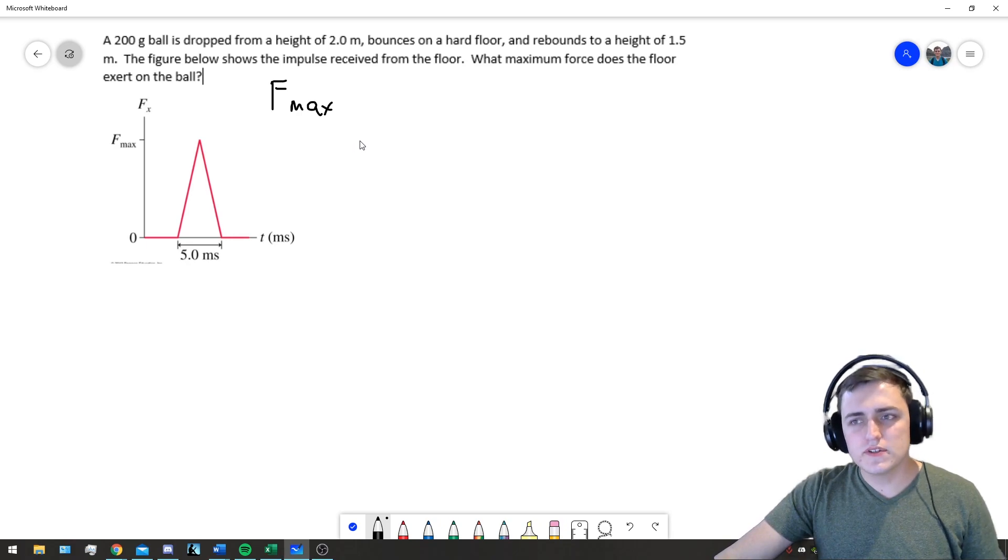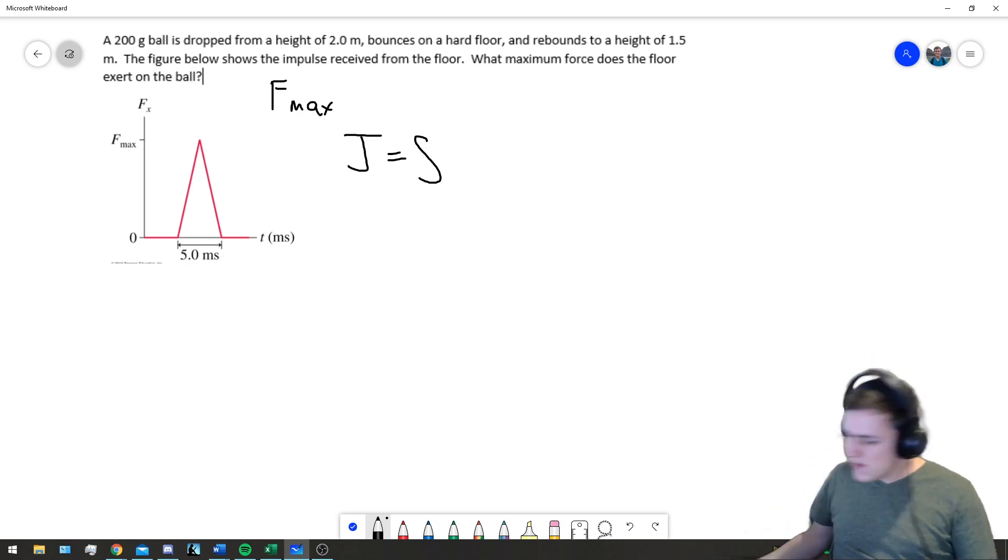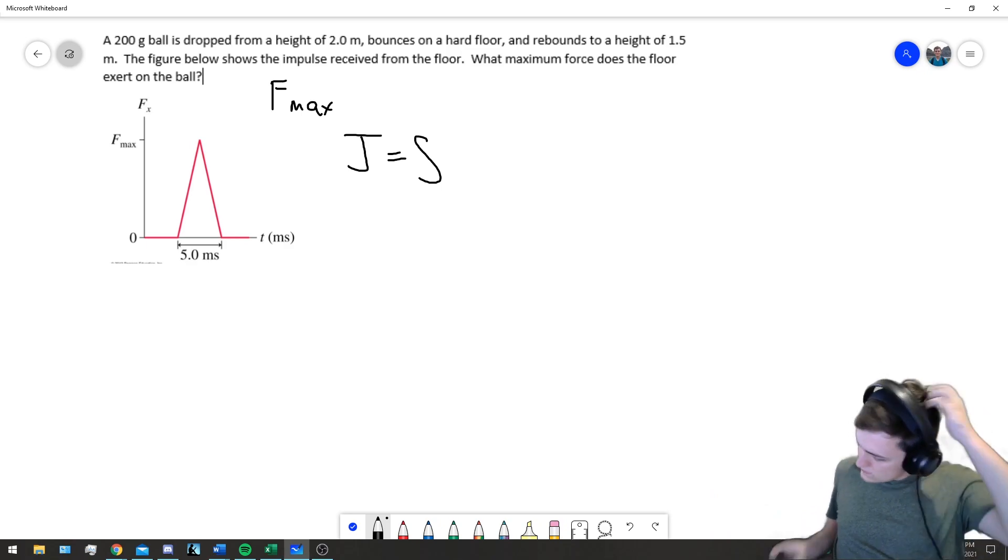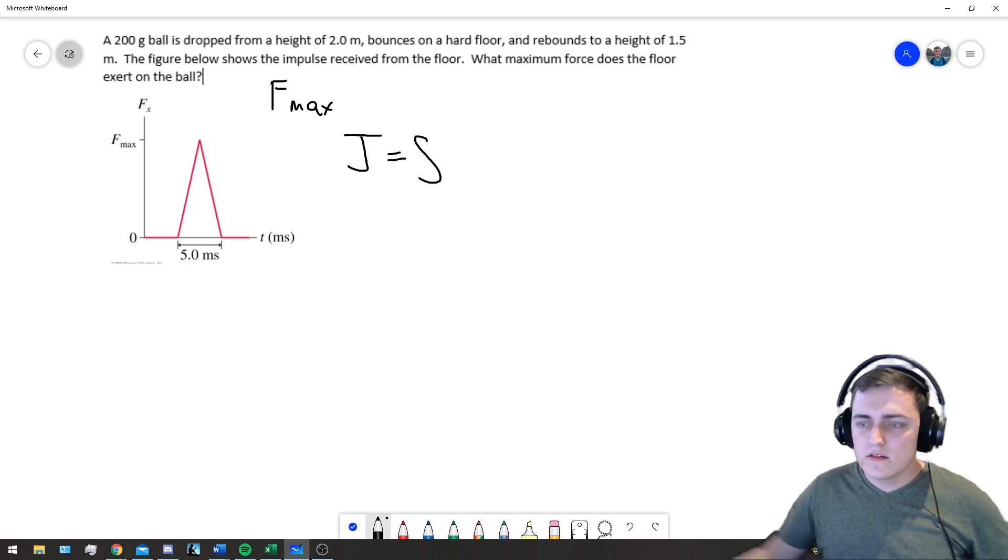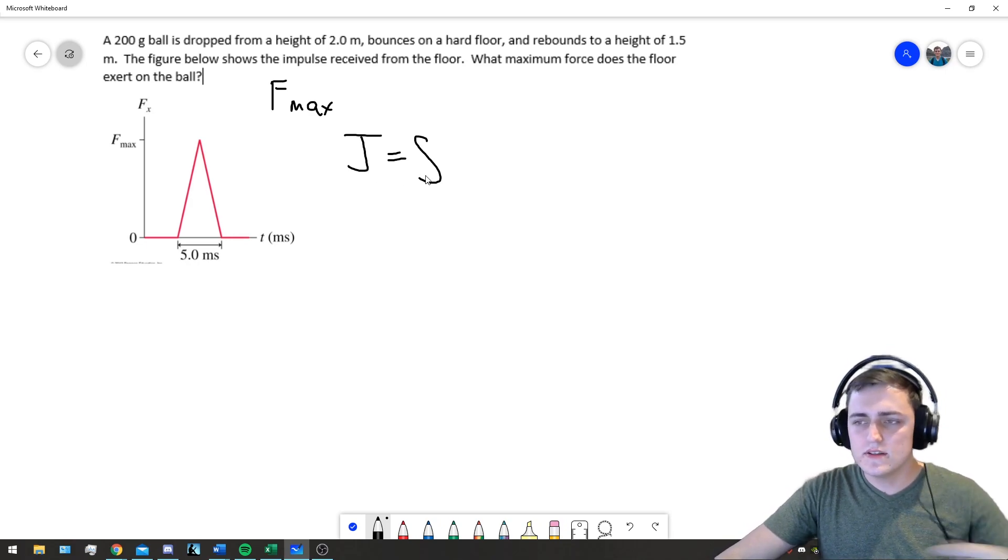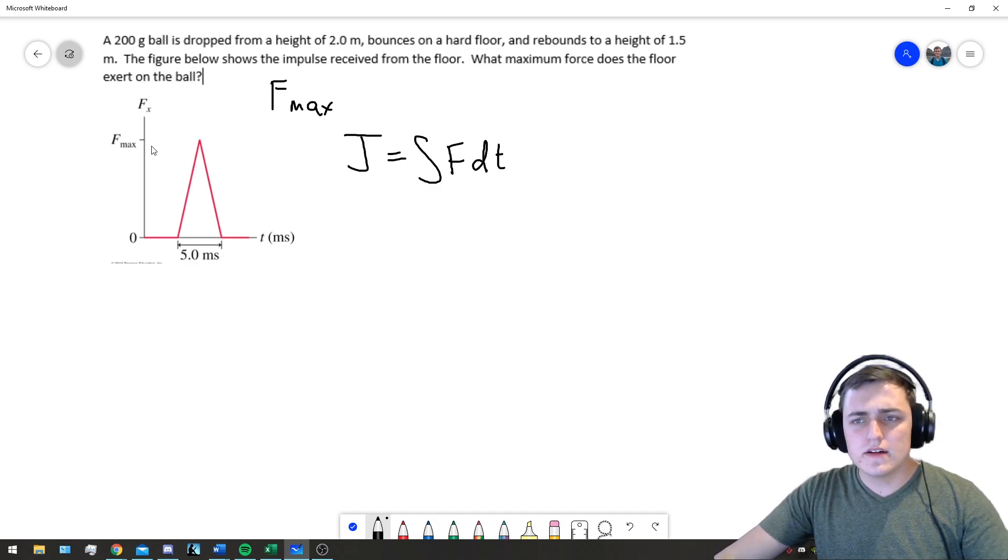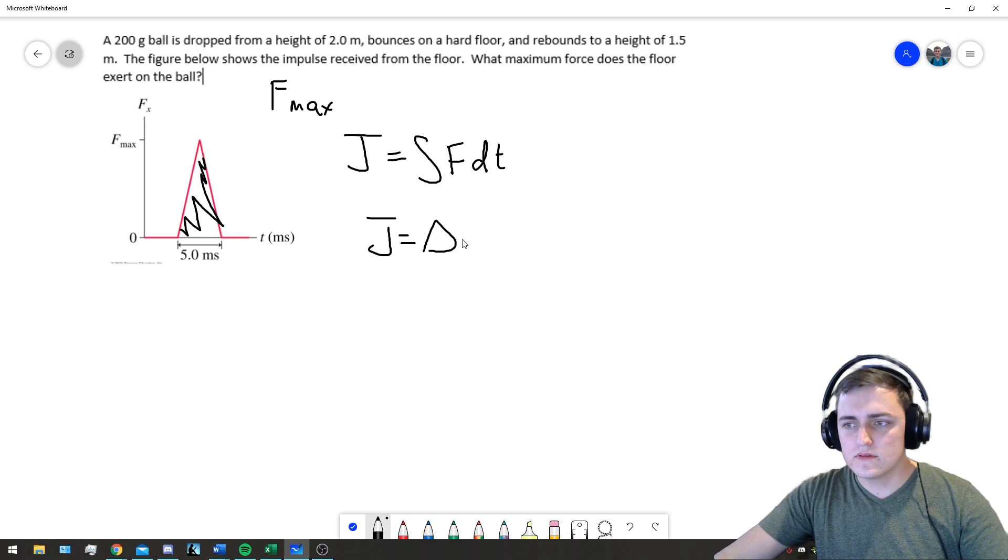The impulse J is equal to the integral of force with respect to time. Really, it's the area under the force-time curve. This area is J.